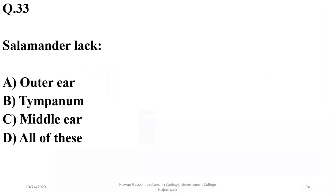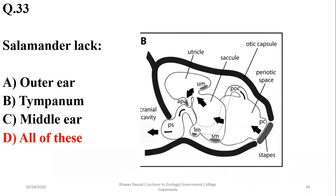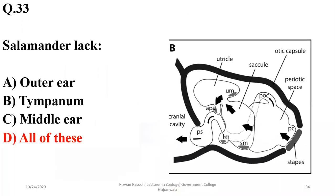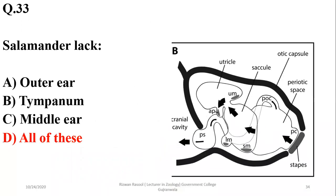Salamanders usually lack an outer ear, tympanum, and middle ear, and there are very few inner ear structures involved in salamanders.